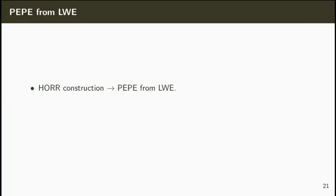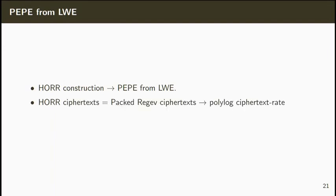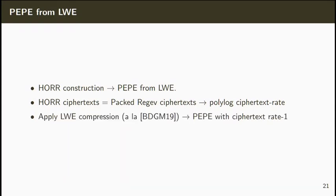We'll start with the LWE case. In fact, the HORR construction immediately gives us a PEP scheme. The ciphertexts of this scheme are packed REGEV ciphertexts, which originally implied a polylogarithmic ciphertext rate. Now, using the compression technique recently introduced by Brackersky et al., we can compress such ciphertexts down to asymptotically RATE1 ciphertexts. We thus obtain a PEP scheme with ciphertext RATE1 from LWE.